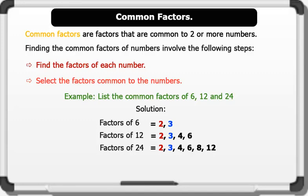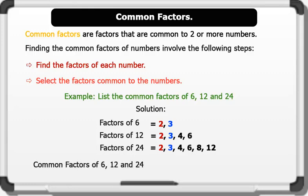Now let's select the common factors. The common factors of 6, 12, and 24 are 2 and 3. That's brilliant.